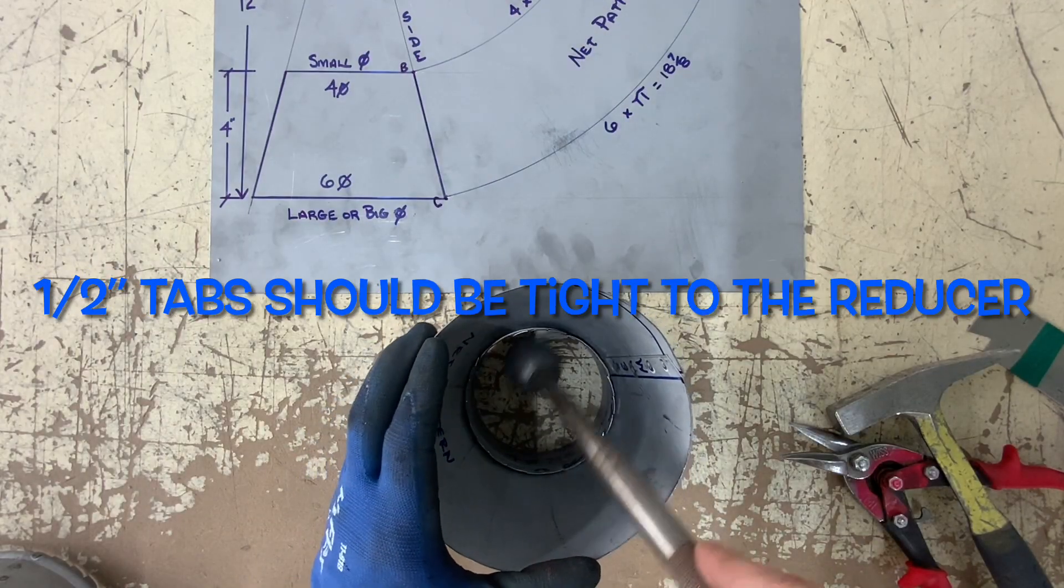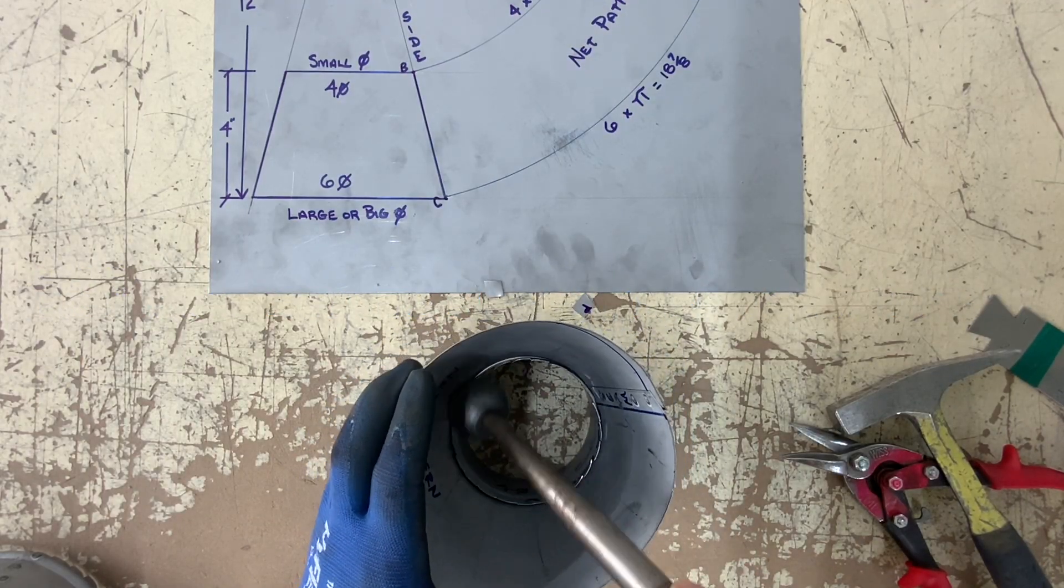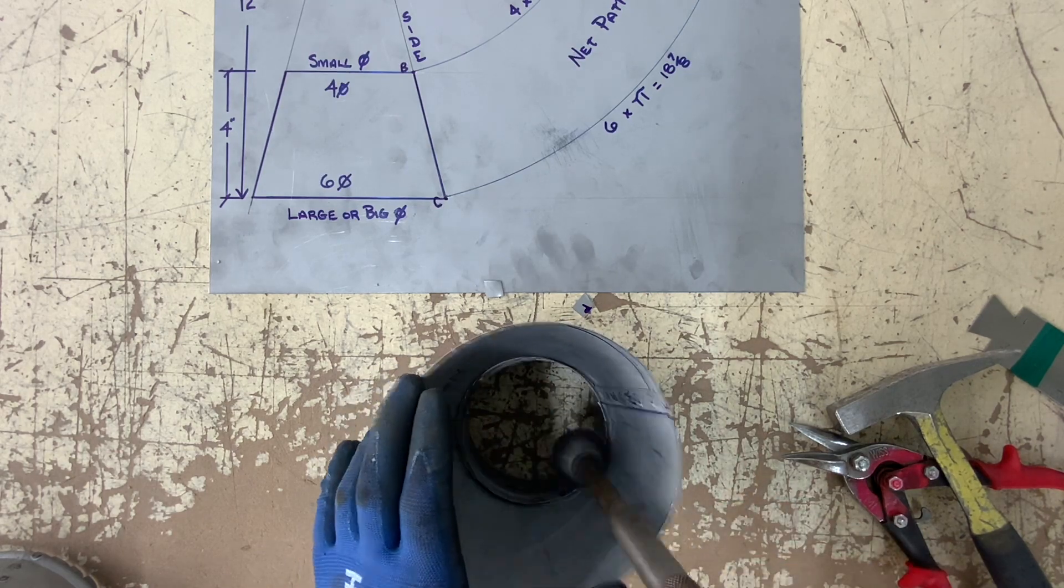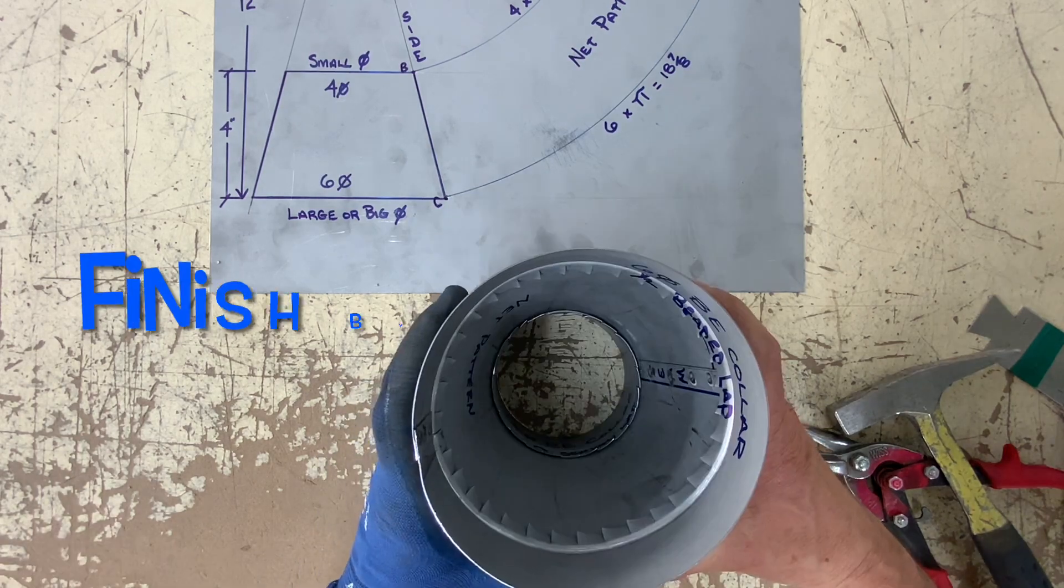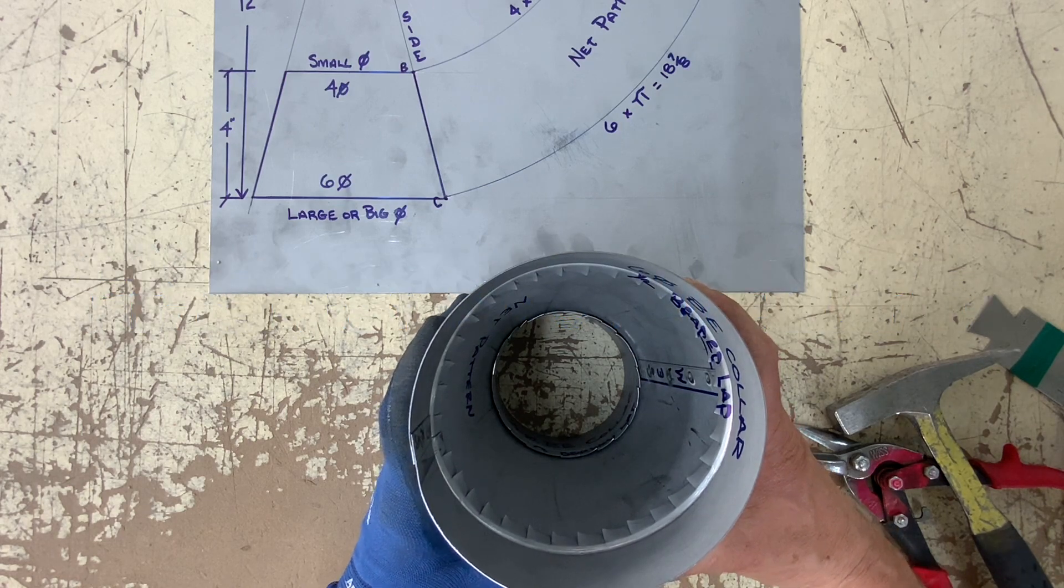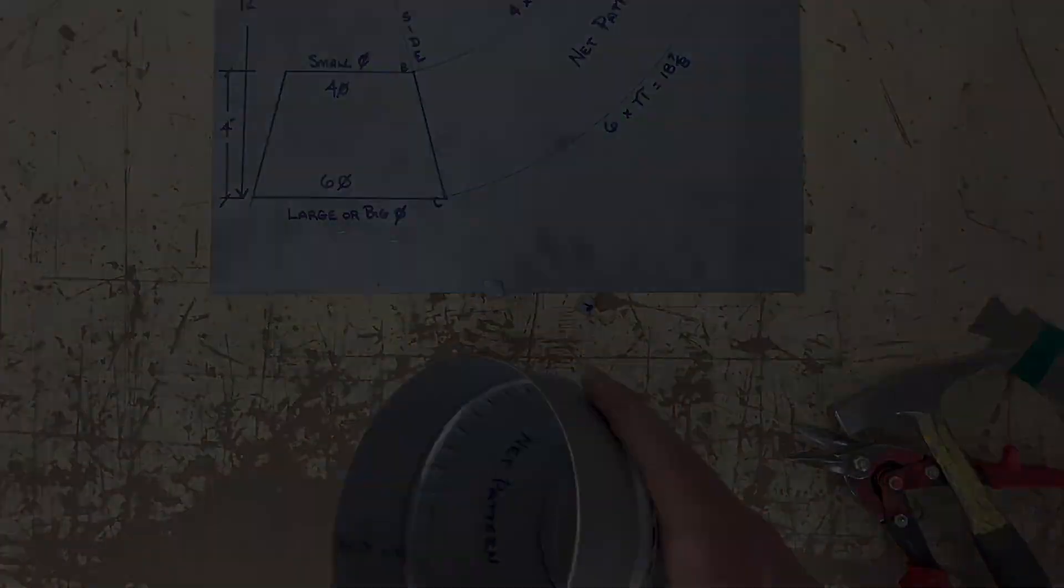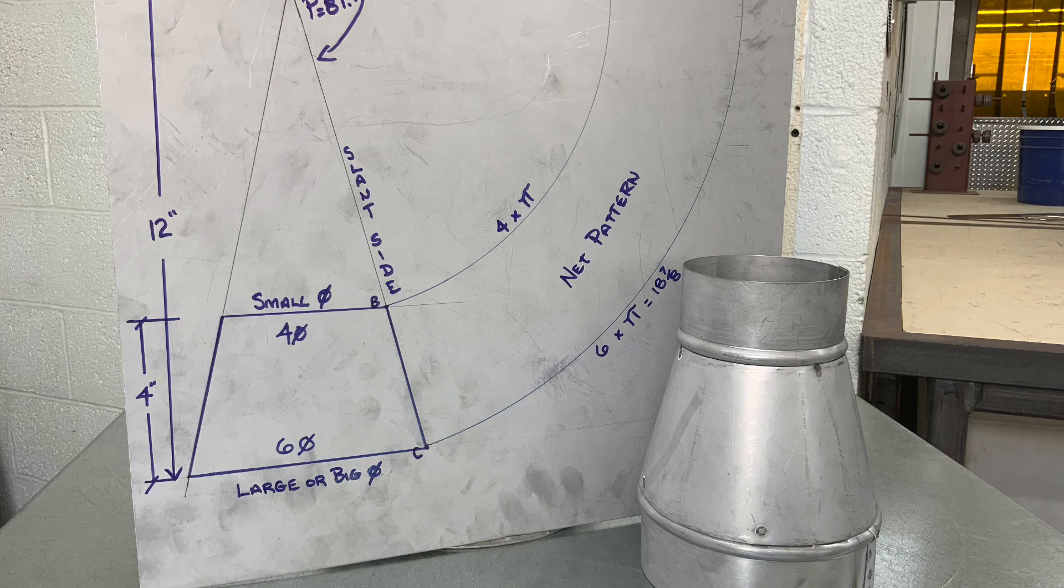We know it fits. The next thing is to tap all those tabs as tight as you can to the frustrum. Only after that can we go and spot weld the fitting. And this is your final reducer.